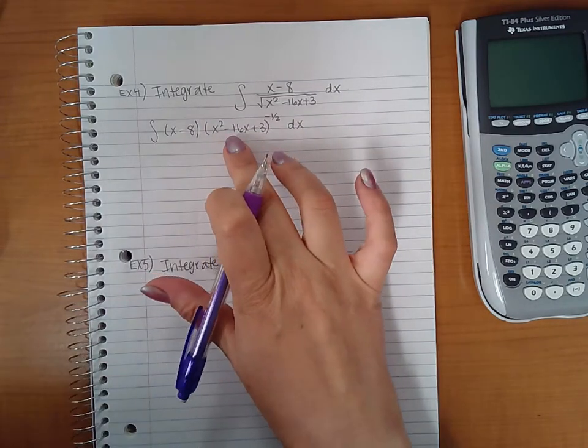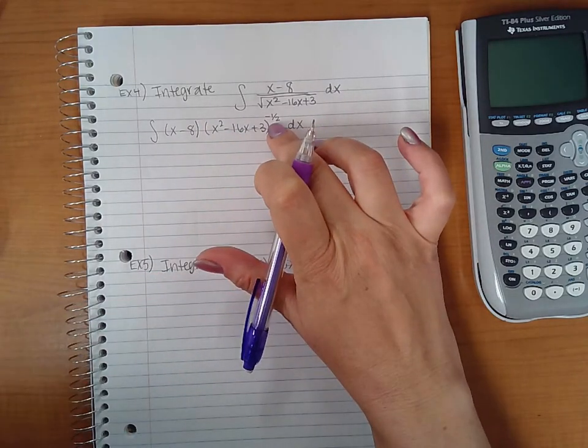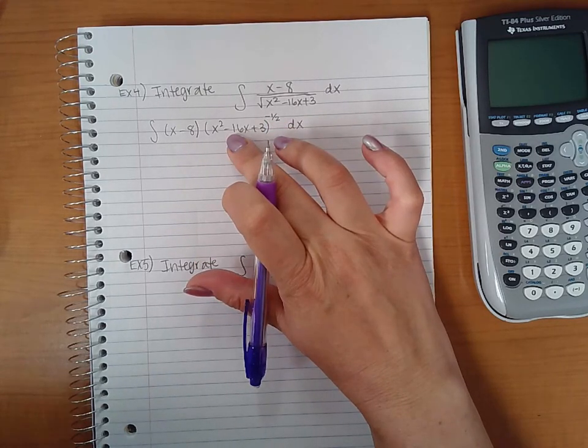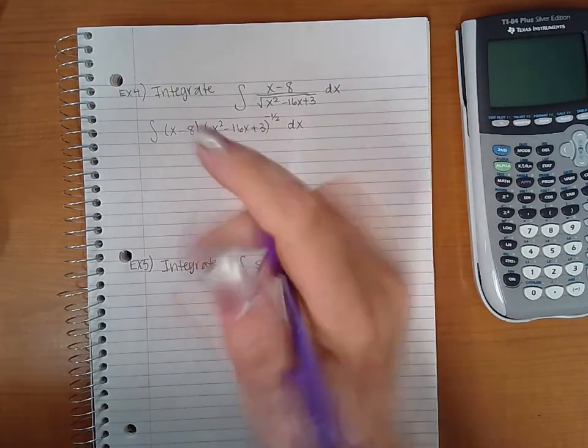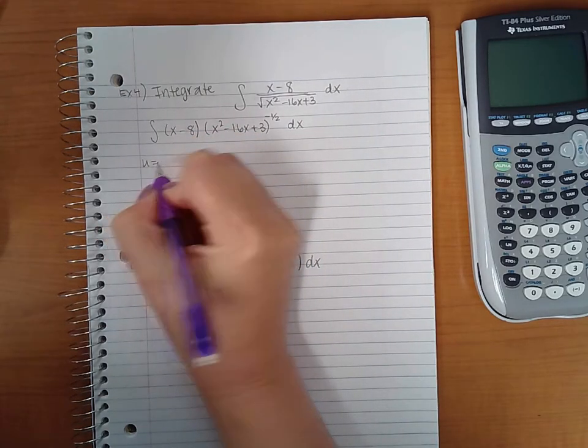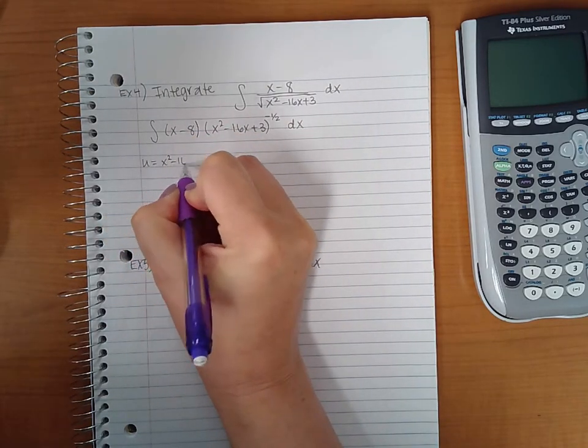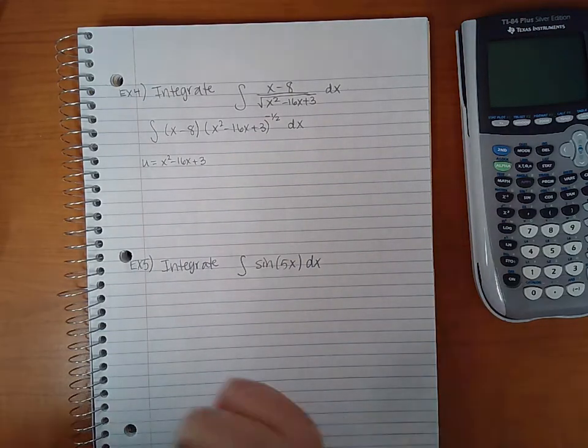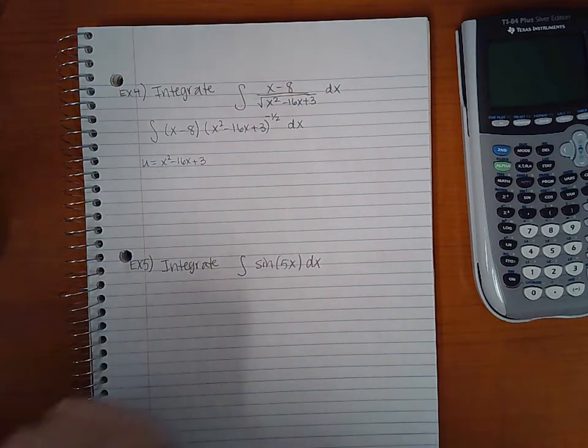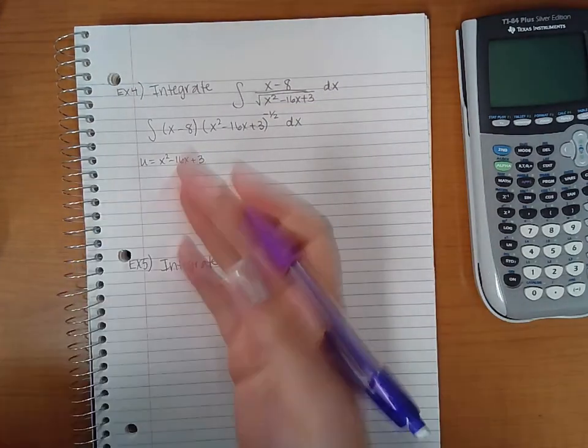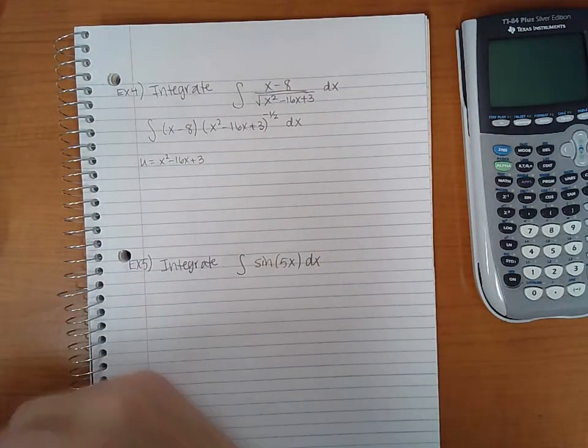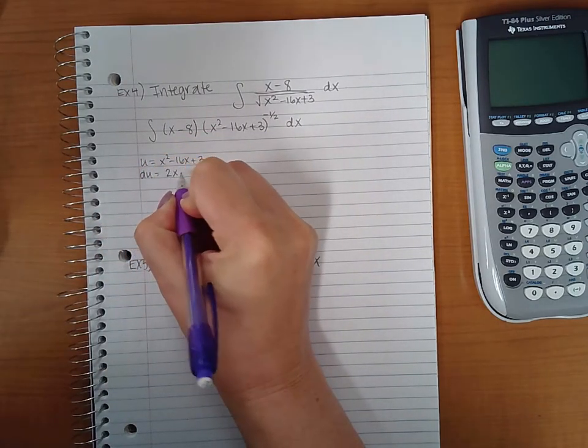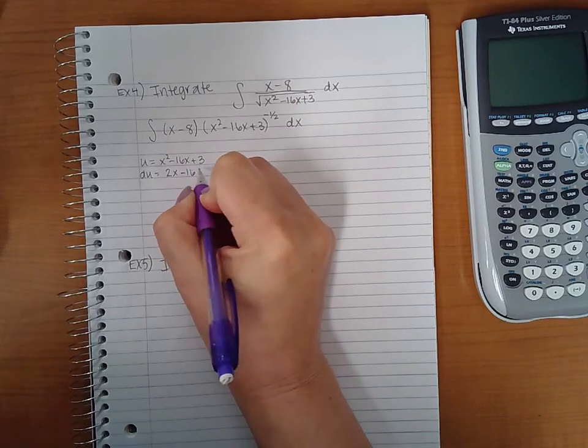This expression has a power of negative one-half, so there is an outside function happening. That is what I would let u equal. So du would be the derivative, which is 2x minus 16, with the dx tagged along.